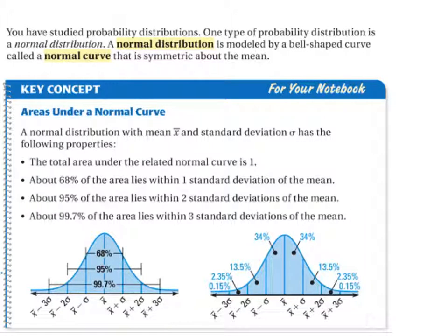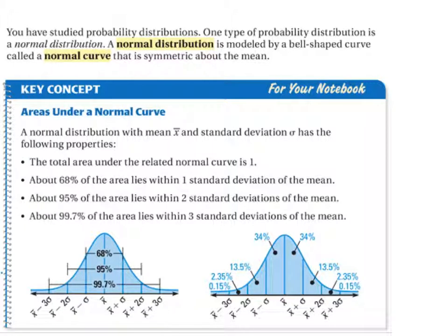You've studied probability distributions. One type of probability distribution is called a normal distribution — a vocabulary word. A normal distribution is modeled by a bell-shaped curve called a normal curve that is symmetric about the mean. And if you remember, the mean is the average.